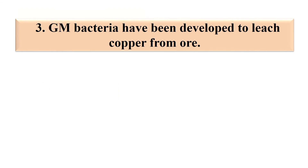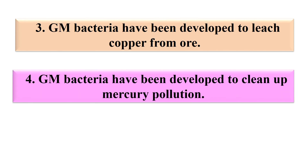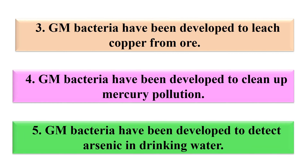Some other uses of genetically engineered microbes include: GM bacteria developed to leach copper from ore, known as bio-leaching; GM bacteria developed to clean up mercury pollution; and GM bacteria developed to detect arsenic in drinking water.